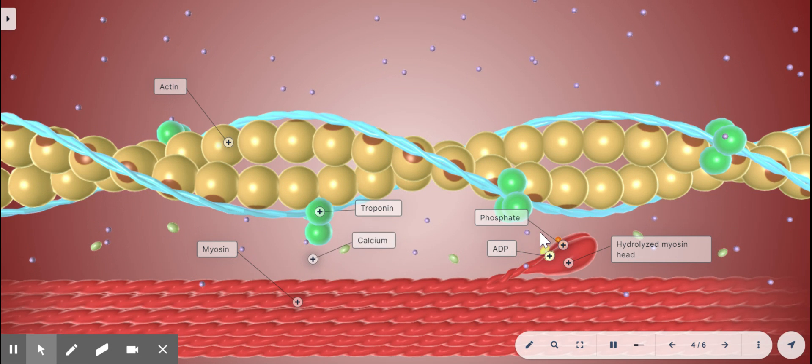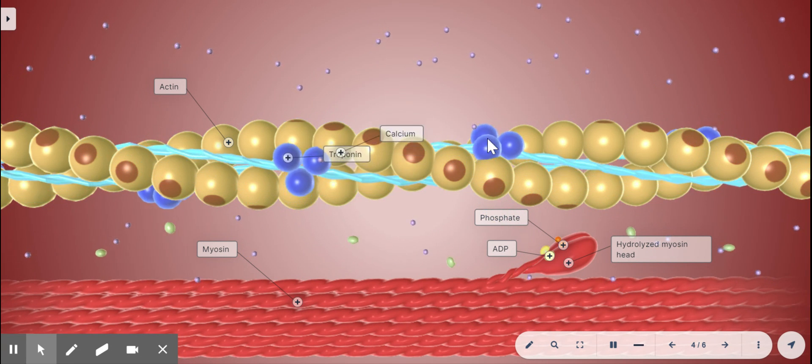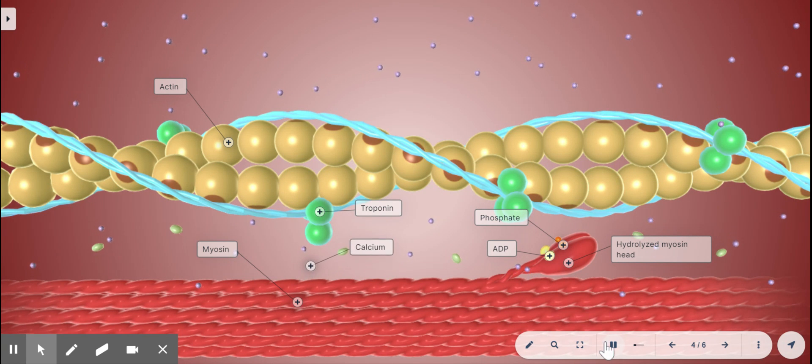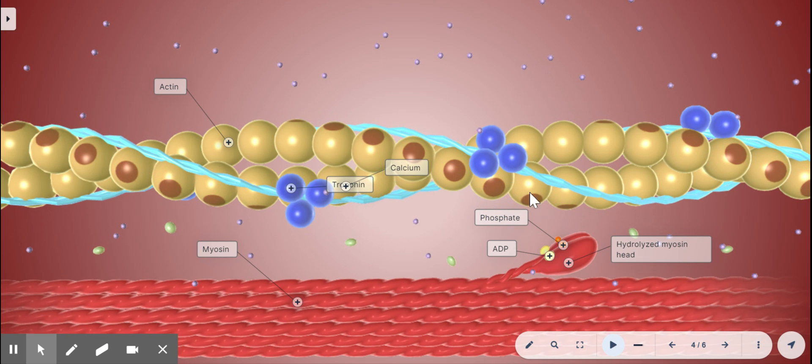So, you'll see the calcium binds to the troponin, tropomyosin untwists, and I'll freeze it here in just a second. When it untwists like that, it exposes these myosin binding sites where that myosin is about to grab it in the next slide.